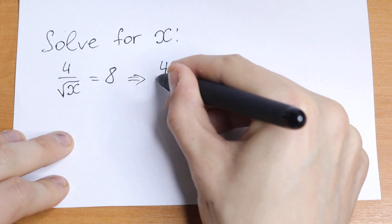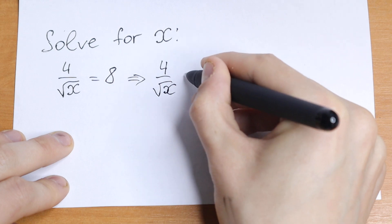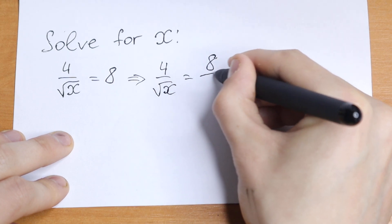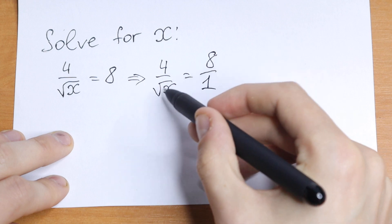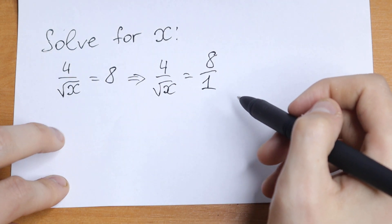So what we'll have? We'll have 4 divided by square root of x equal to 8 divided by 1. So I write this 1, nothing changed, but I want to use cross-multiplying right here.